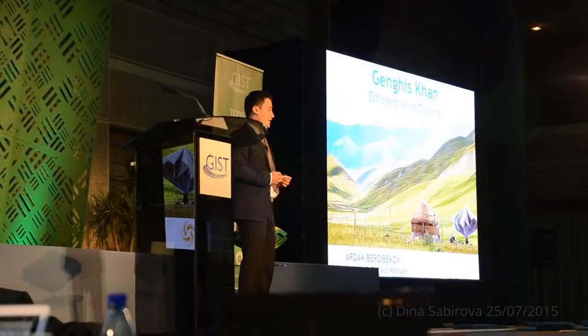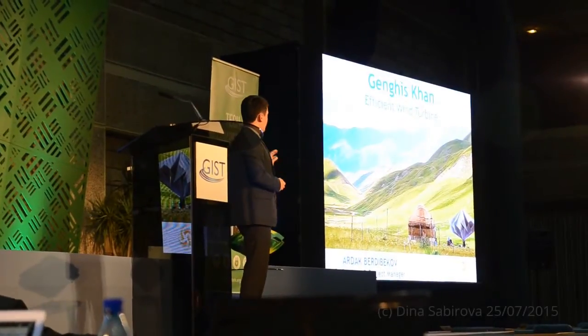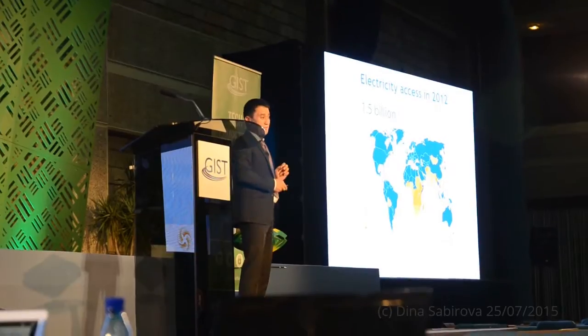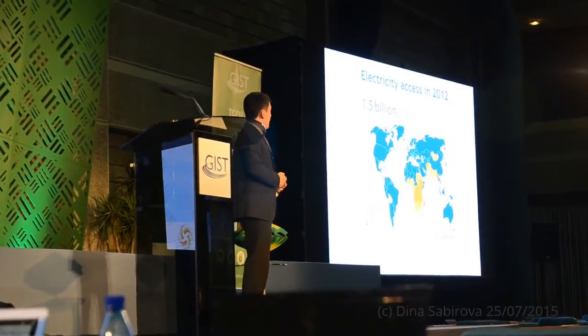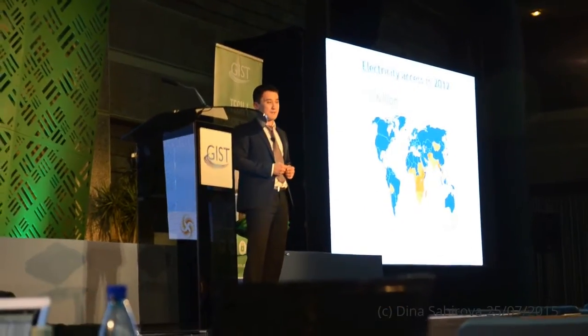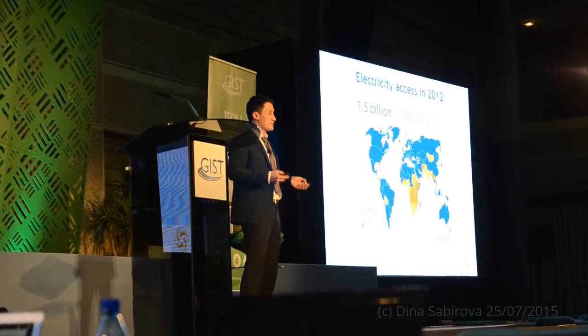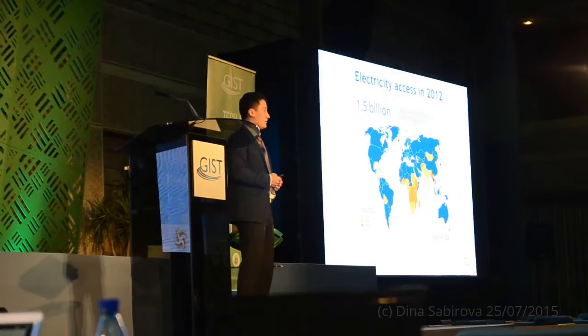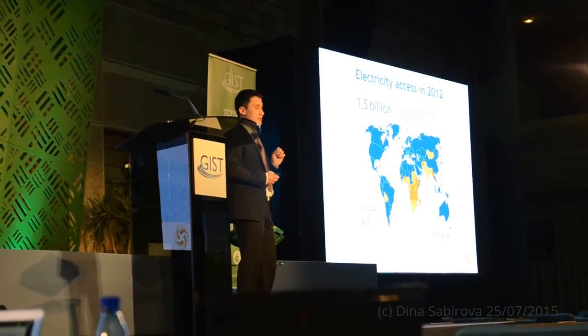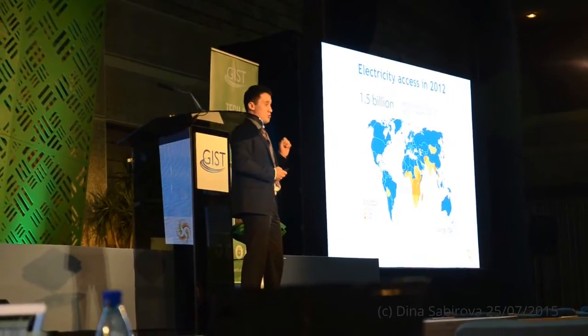Look at the picture and see how the numbers are big. 1.5 billion people don't have access to electricity worldwide. This is almost 20% of all humanity.